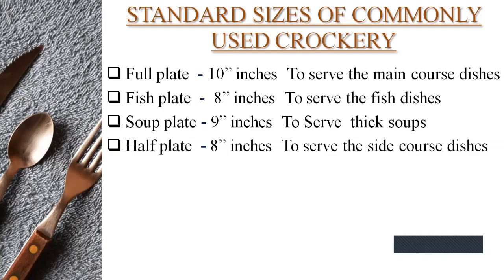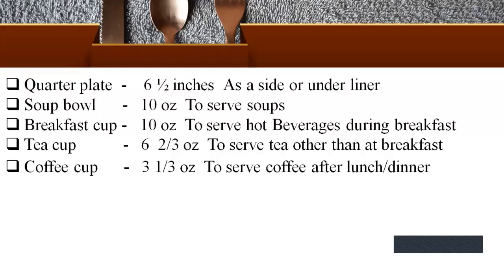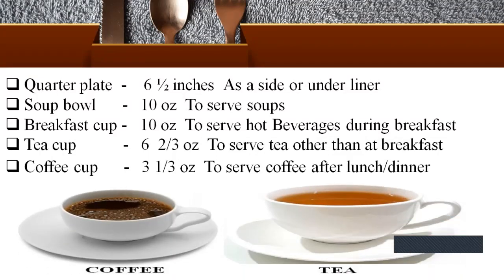You can see here in this picture: full plate, half plate, and quarter plate — these are also dessert plates. The quarter plate, also called a side plate or underliner, is 6.5 inches. Soup bowl is 10 ounce — that is 300 ml — used to serve soup. Breakfast cup is 10 ounce, used to serve hot beverages during breakfast. Tea cup is 6 and 2/3 ounce, used to serve tea other than at breakfast. Coffee cup is 3 and 1/3 ounce, used to serve coffee after lunch and dinner, and is also called a demitasse cup in French.